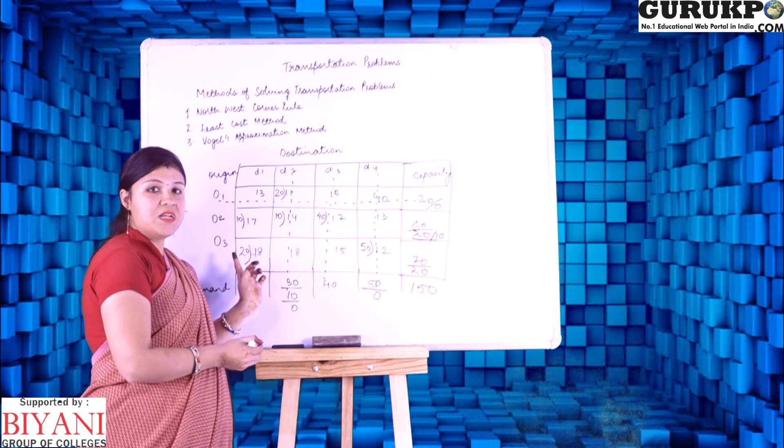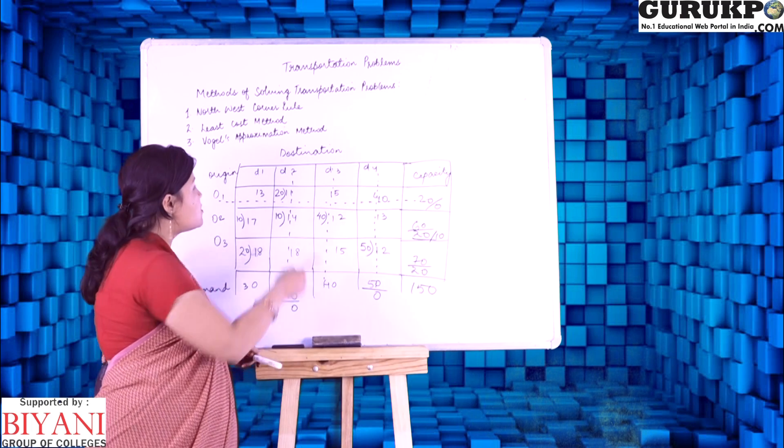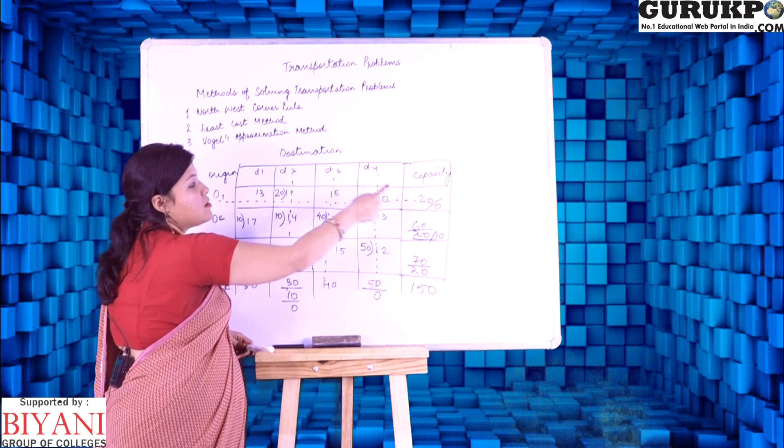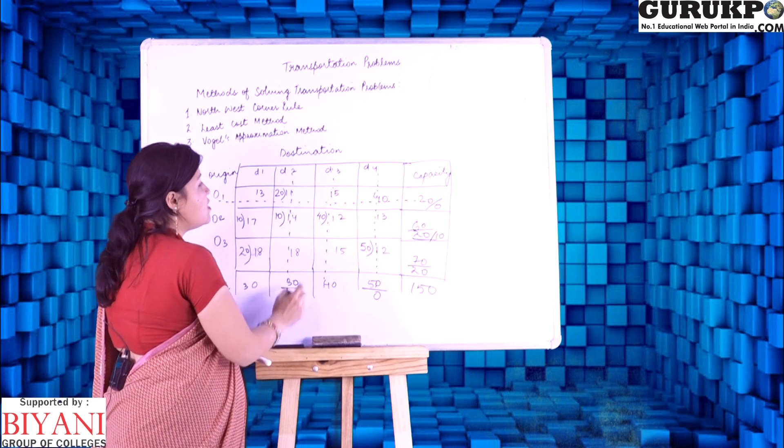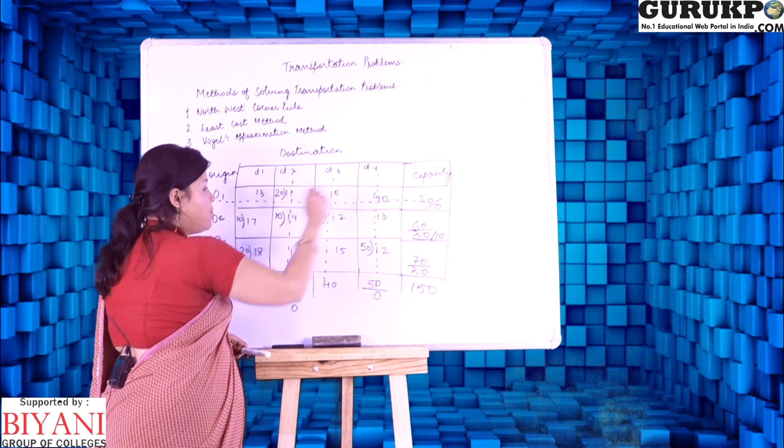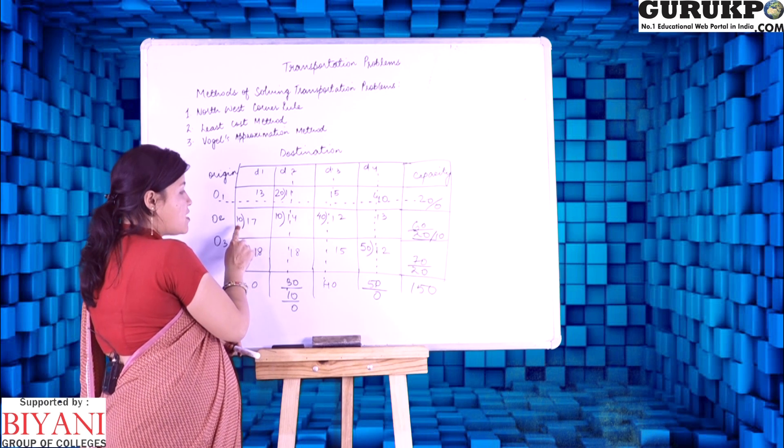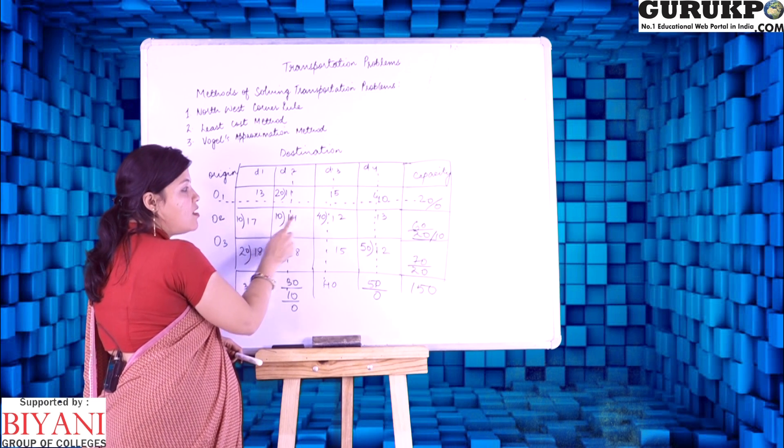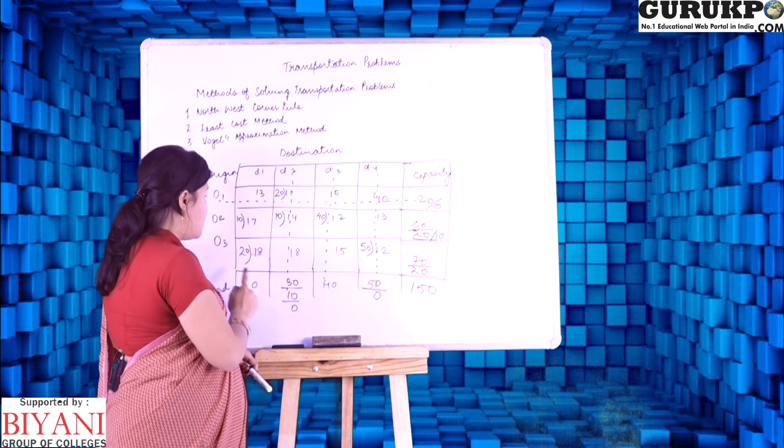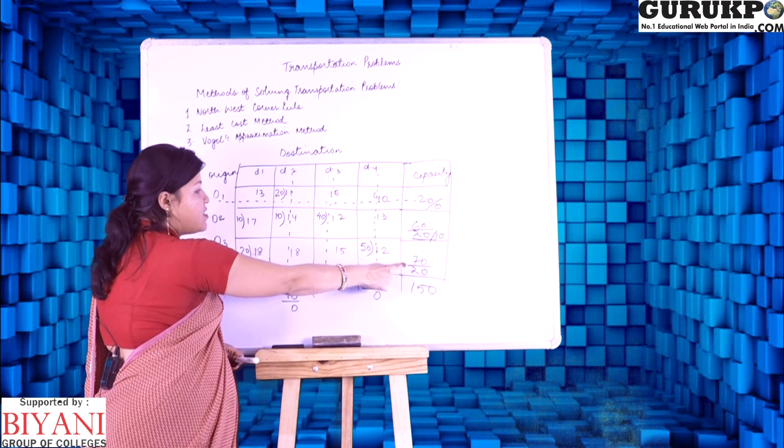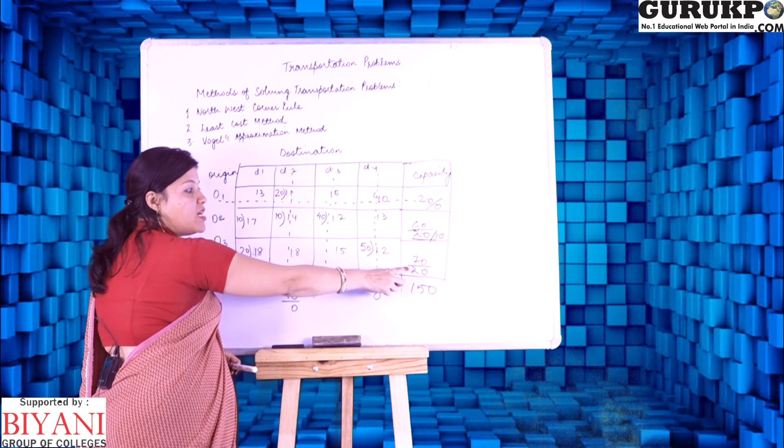Now, we will just check it out. From O1 origin, the capacity is 20, so it is only 20. From O2, it is 60. So, let us calculate 10, 10, 20, 40, it comes to 60. Now, O3, it is 70, 20 and 50, it is 70.